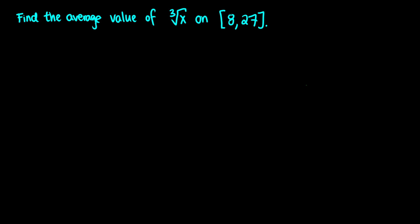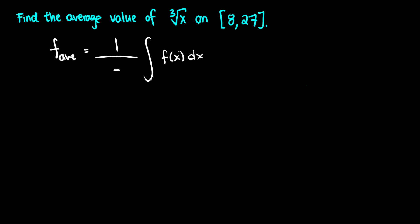To make this more straightforward, I'm going to write out the entire formula and then make some substitutions. The average value of f is 1 over the length of the interval — so b minus a — times the area under the curve, which is the integral of f of x dx. Plugging in the interval: this will be 27 minus 8, which determines the upper and lower bounds on our integral. Now we replace f of x with our function, the cubed root of x, multiplied by dx.